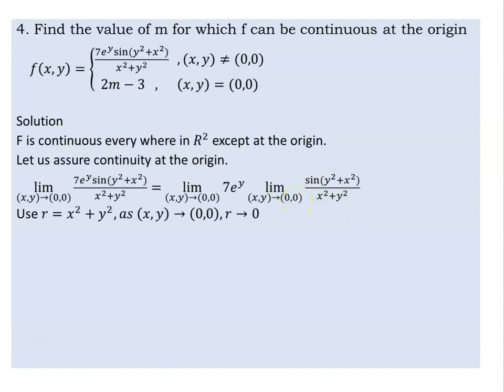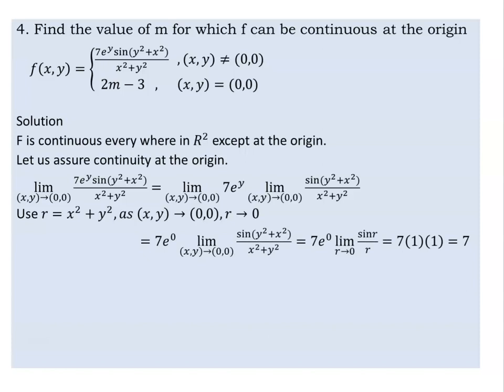As r approaches zero, this is what we call the limit. Automatically it is zero for the extra term. 7 is the power, and we have sine(r) over r, because r equals y squared plus x squared. The power of zero is 1, so sin(r)/r approaches 1.